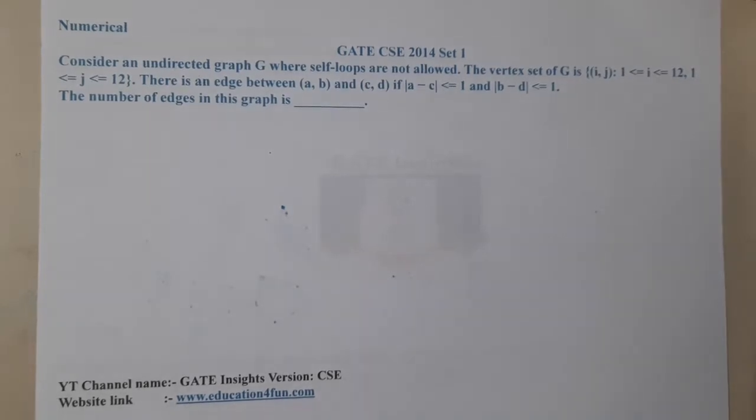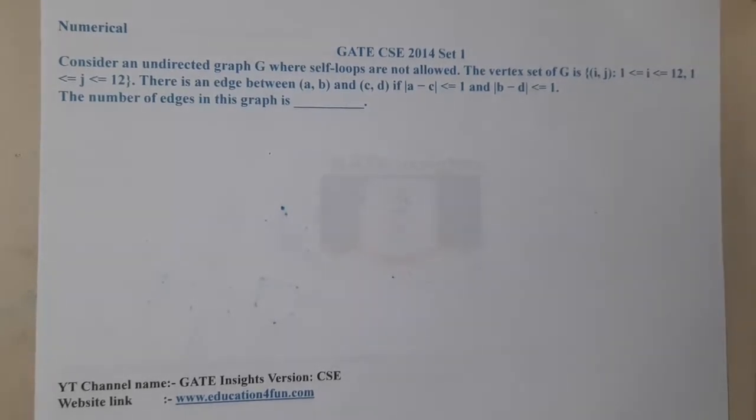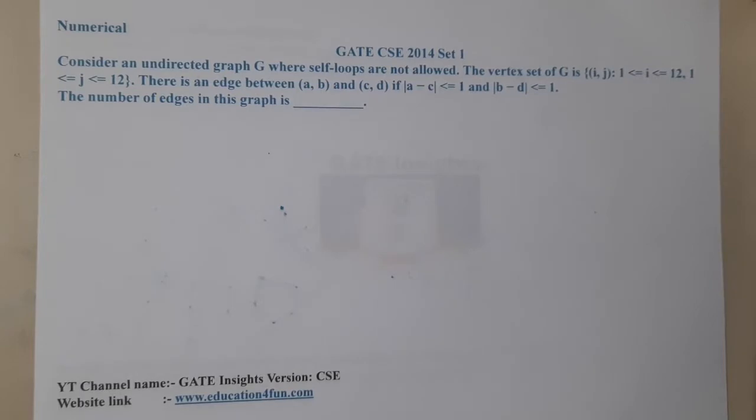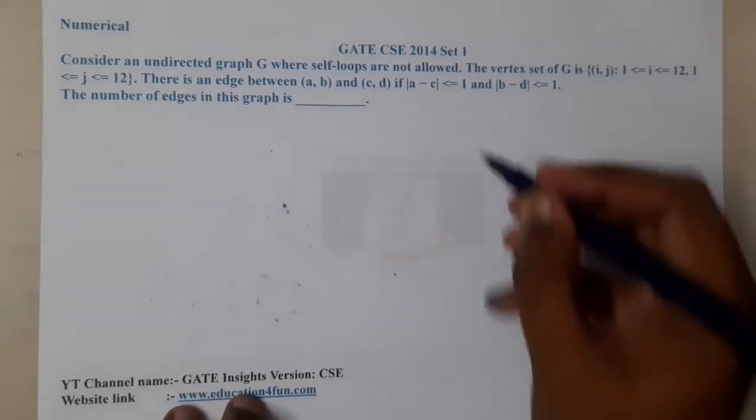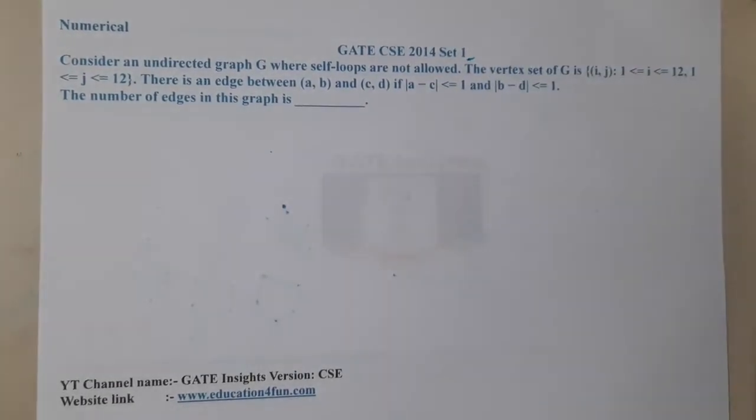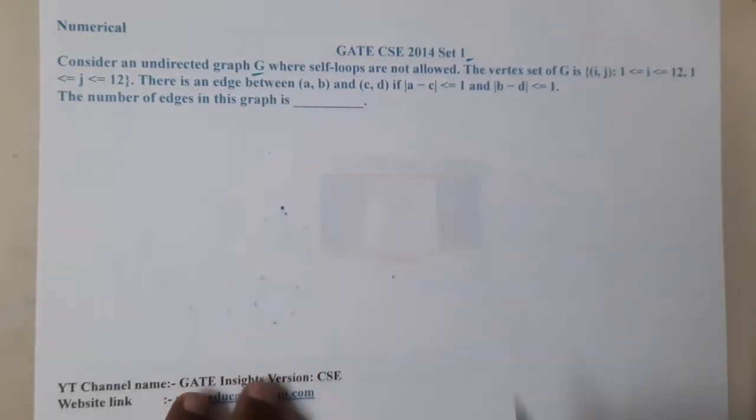Hello guys, we are back with the next lecture. In this lecture, let's go through the next question. This question belongs to GATE CSE 2014 Set 1. The question is: consider an undirected graph G where self-loops are not allowed.